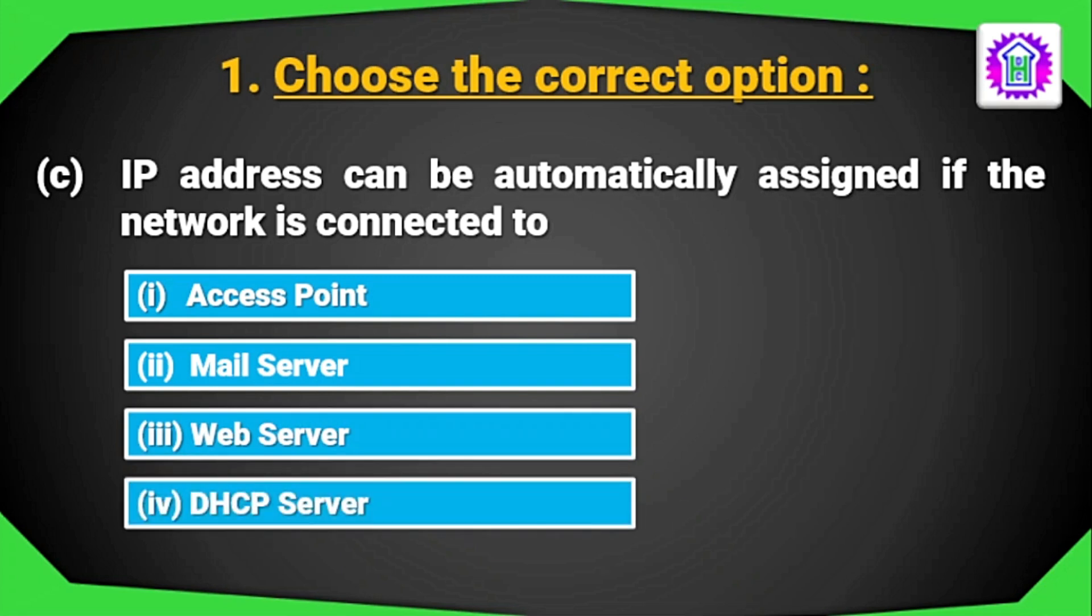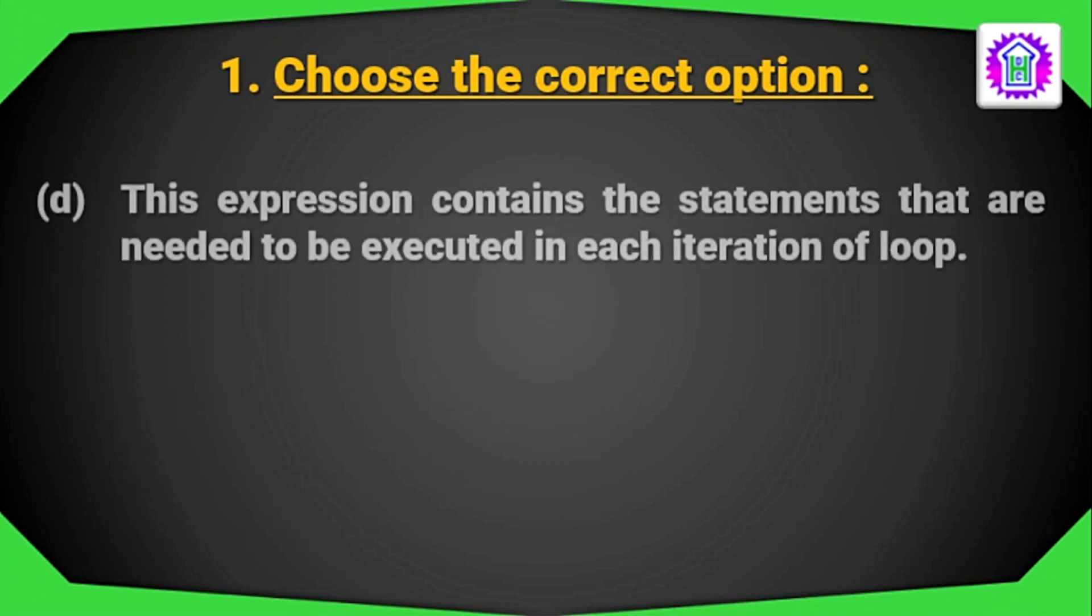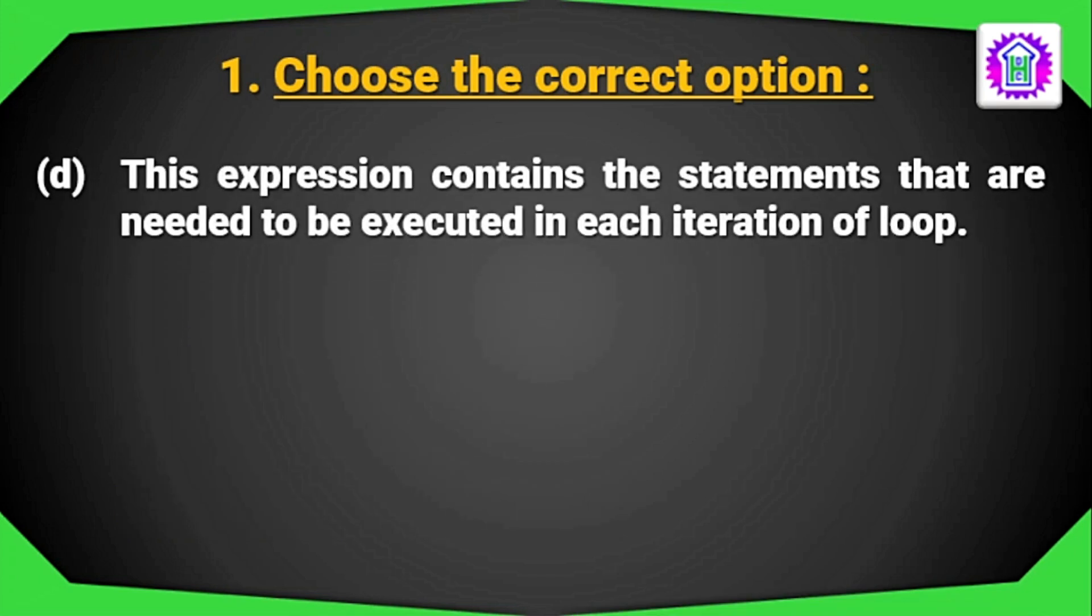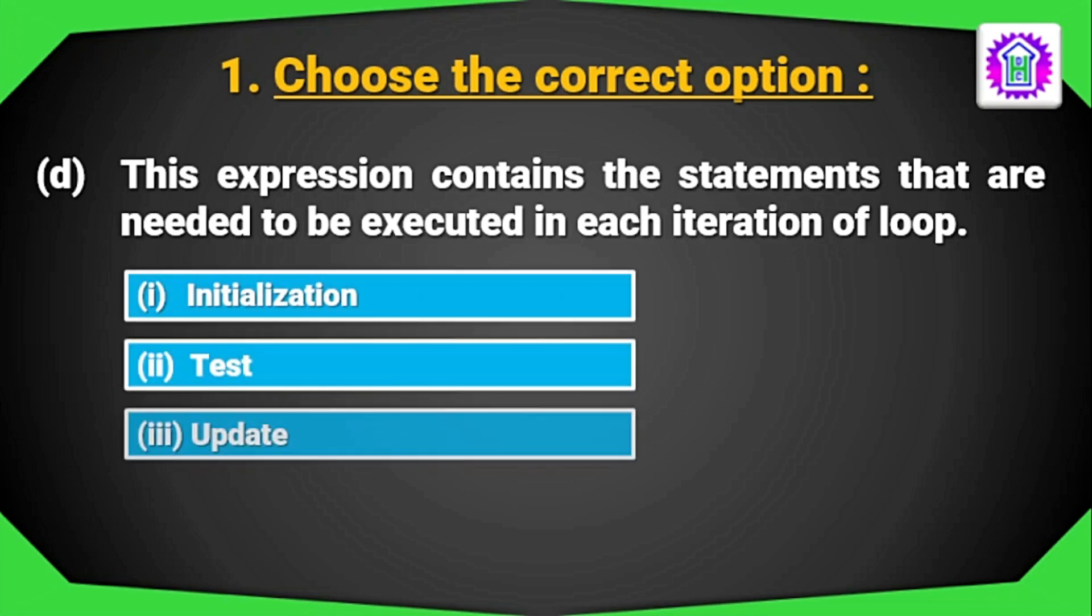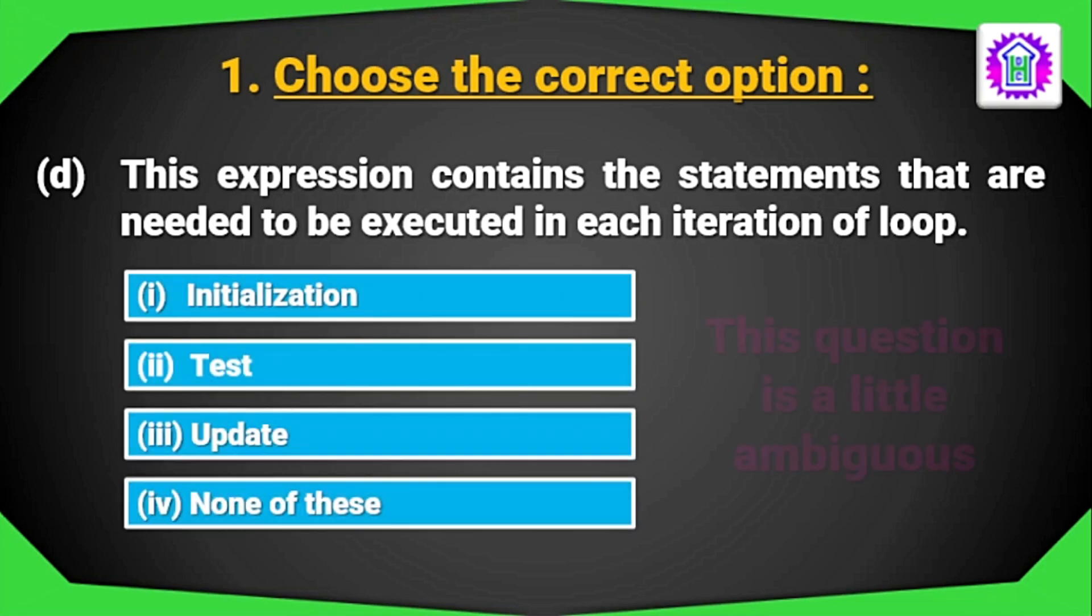It should be DHCP Server because DHCP Server can dynamically assign addresses. Question number D, this expression contains the statements that are needed to be executed in each iteration of loop. Options are Initialization, Test, Update and none of this.